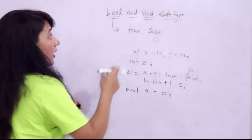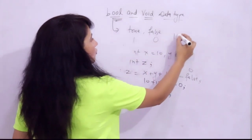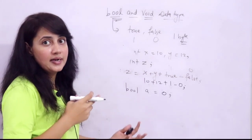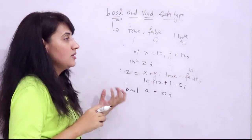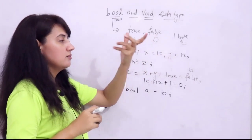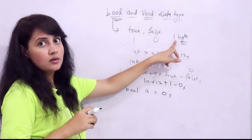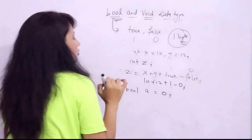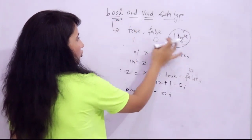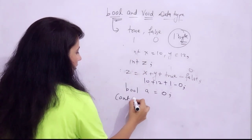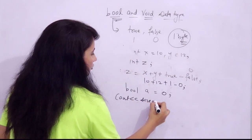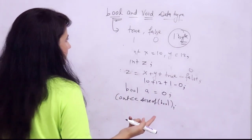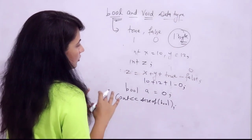The size of bool is 1 byte, though it can be implementation-dependent and may vary by compiler. On most systems and compilers it is 1 byte. You can find this out using: cout << sizeof(bool); which will give you 1. That covers the bool data type.